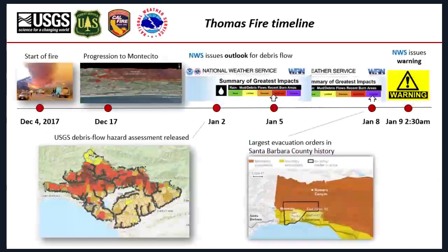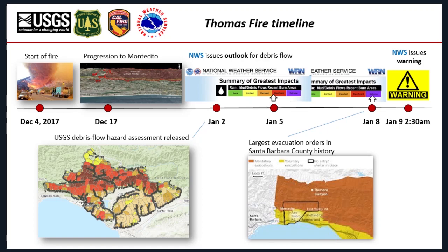For the Thomas Fire, which started December 14th, 2017 and burned through the Christmas period, the Weather Service recognized potential for an atmospheric river to impact Southern California just before the new year. This prompted the USGS to deliver a hazard assessment to local emergency management and the US Forest Service. On January 5th, the National Weather Service issued a significant potential warning for debris flows in the Thomas Fire area, raised to extreme on January 8th, prompting one of the largest evacuations in Santa Barbara history.